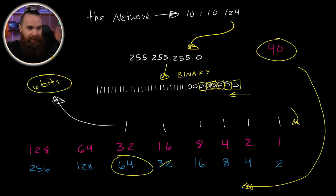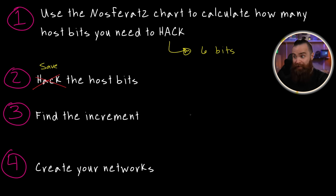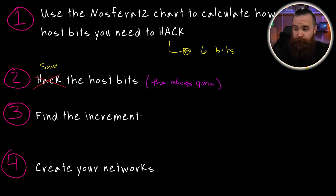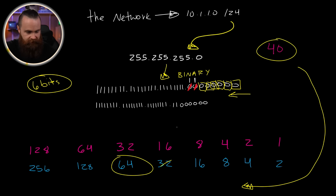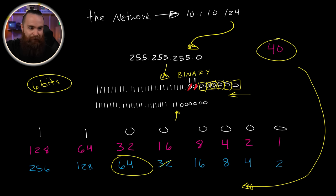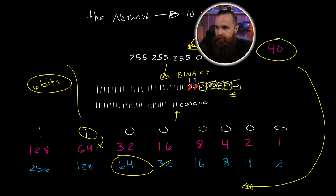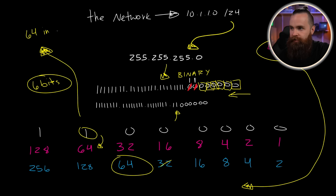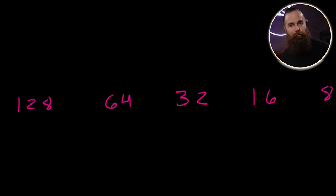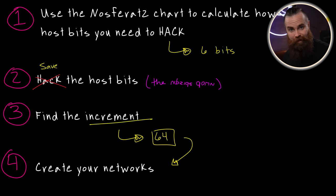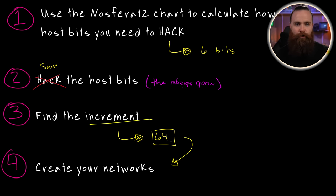Anything else, we're going to let get hacked. We reserved our six — that's all we had room for, we're going to hack the rest. The rest of the host bits are now on the other team; they're now network bits. That's really the only difference between network and host requirements — that second step, the upside down. Next we find our increment, which is the last network bit we have. Let's draw the new mask out. The last network bit represents 64 on the Nosferatu chart, and 64 is our increment.